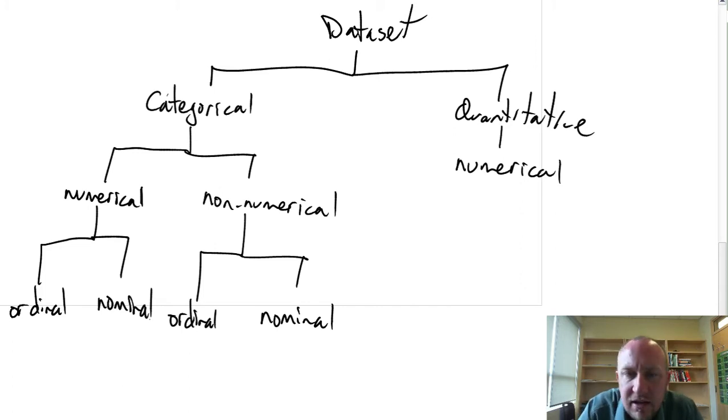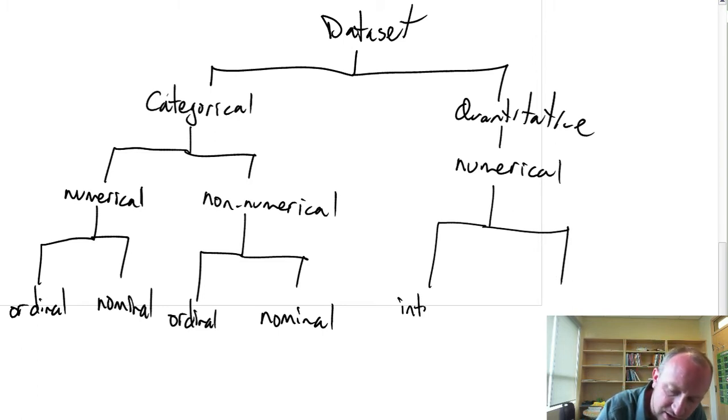Okay, so if we've identified a variable as being either ordinal or nominal, then I know it must be categorical. So quantitative variables, they have to be numeric, they have to be measuring a quantity of something, how much, how many.